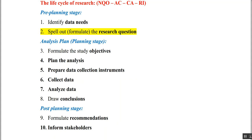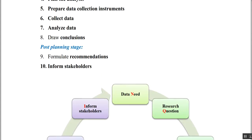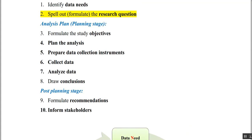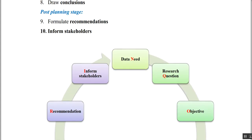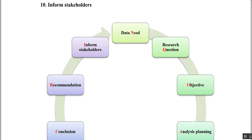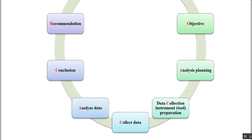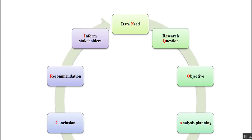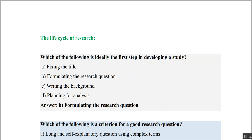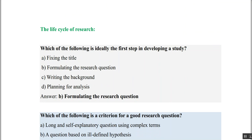A mnemonic has been made to remember the lifecycle steps — feel free to suggest a better one in the comments. The mnemonic is: Data need, Question, Objectives — then Analysis planning, Data collection tool, Collection of data — that is N, Q, O, A, C, C — then Analyze the data, Conclusion, Recommendation, and Inform the stakeholders — so A, C, R, I.